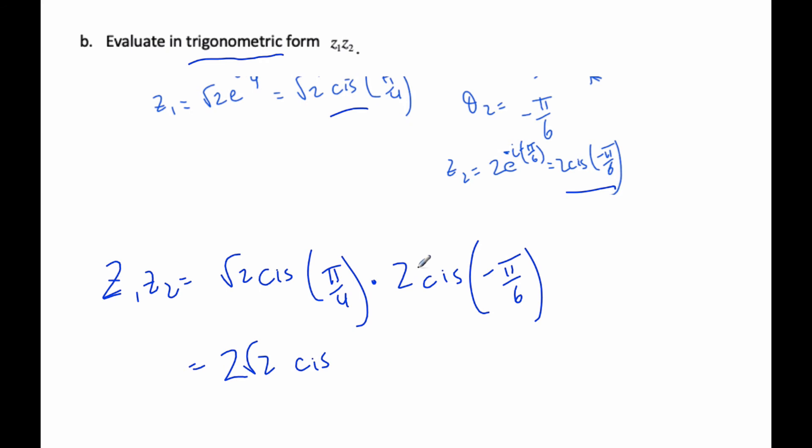and now I have to add these angles. If I think common denominator, I get 3 pi over 12 if I multiply by 3 by 3,